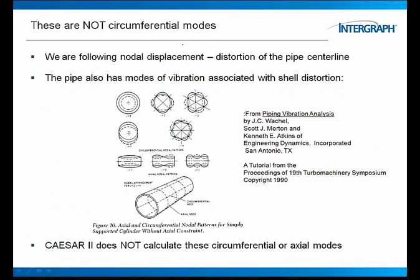Now, I got an email yesterday that, oh, if you're going to talk about modes of vibration, make sure your audience understands that we are not talking about circumferential modes of vibration. That is true. We are only following nodal displacement, the distortion of the pipe centerline. We are not looking at these circumferential modes where we see we get these lobes in our pipe wall. If you have a thin wall, large chamber to pipe, you can get the wall actually wobbling in and out or along its length. That is not Caesar II. We are a beam model.